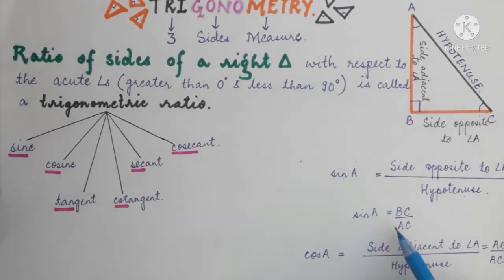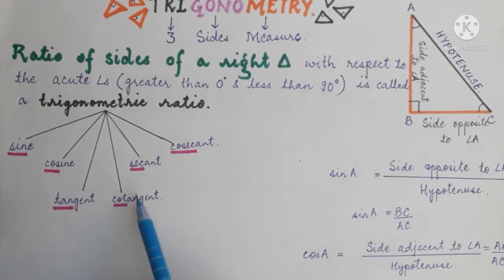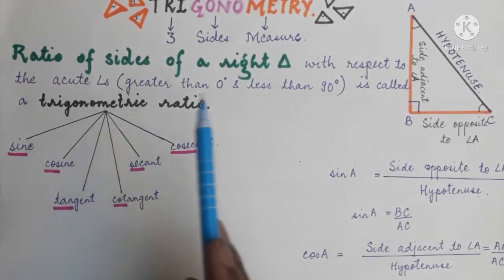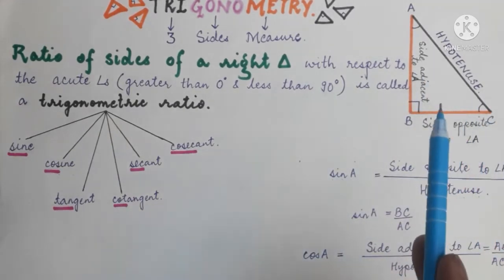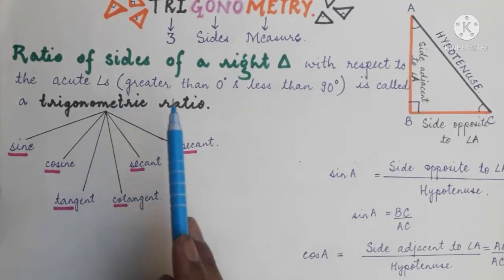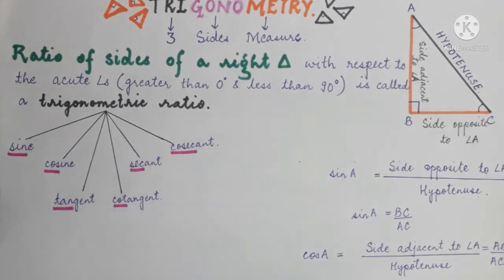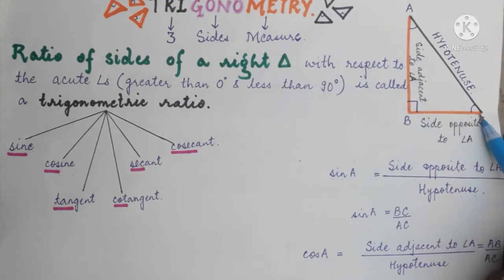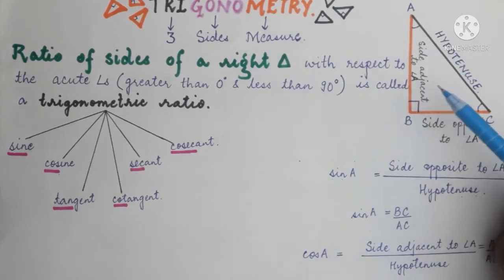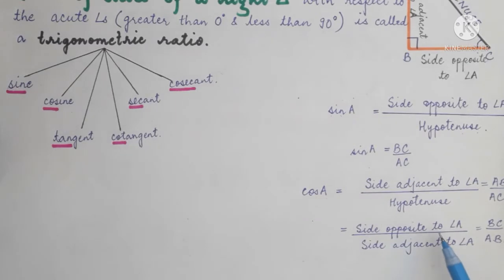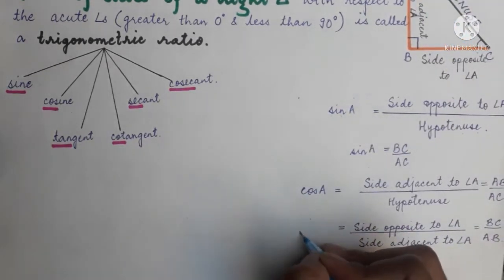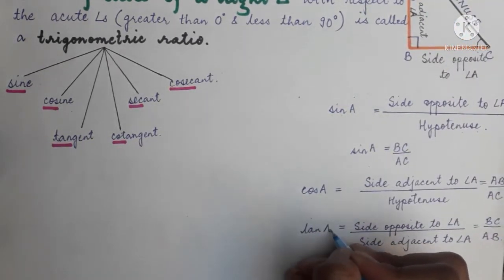I hope you are getting the points. Sine, cosine, tangent, secant, cosecant — these are nothing but the ratios of the sides of a triangle, and these ratios are called the trigonometric ratios. Let us take another ratio: side opposite to angle A upon side adjacent to angle A. The name of this trigonometric ratio is tangent of angle A, written as tan of angle A.